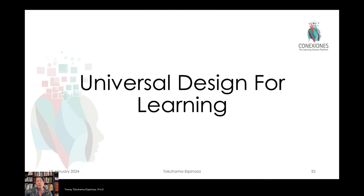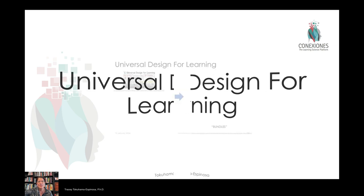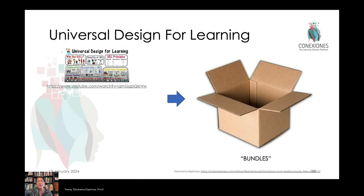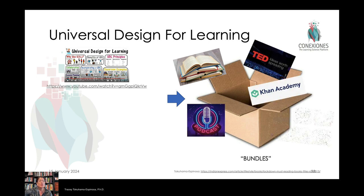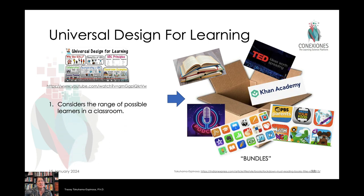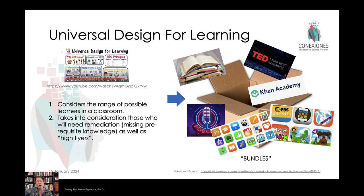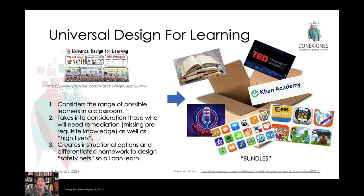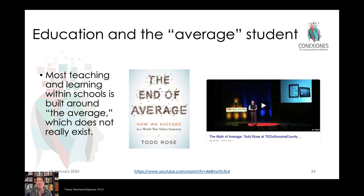The third design element has to do with universal design for learning — a fantastic concept which comes up with this idea that we can diversify, individualize, and personalize students' learning. We take into consideration the range of learners and all of the resources we have, then design a learning experience where everybody gets what they need. It's a concept that looks at the idea of 'the average' as being an unrealistic goal — different people will need different things at different moments.